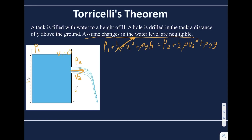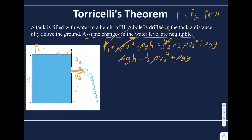We can also cross out P1 and P2 because they're equal — both points are open to the atmosphere, so both are at atmospheric pressure, and they cancel. We're left with rho g h equals one half rho v2 squared plus rho g y. The rho's cancel, and we get the speed at point 2 — the speed leaving the container — is the square root of 2g times (h minus y).